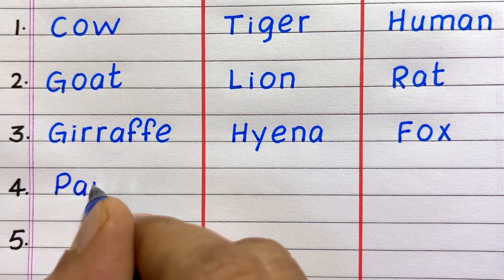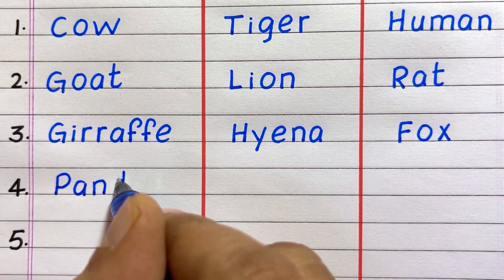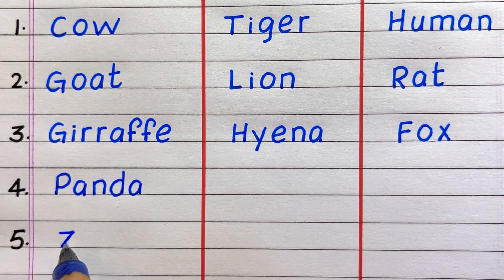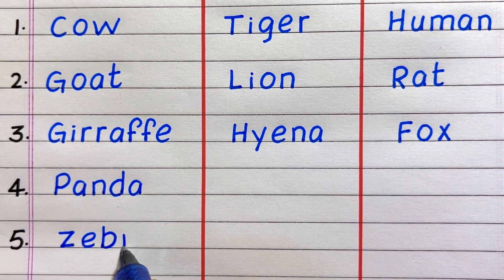The fourth example of a herbivore is panda, fifth zebra.